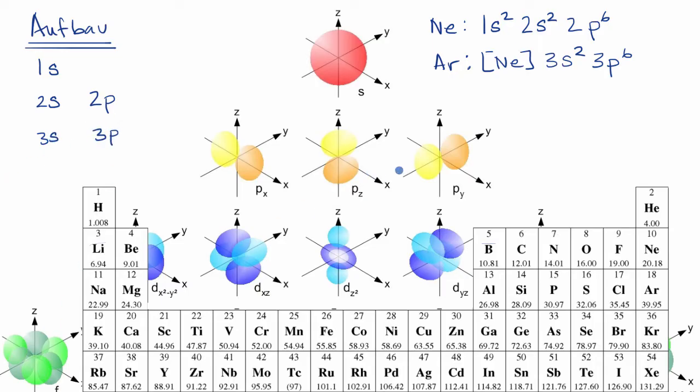Now, what would be the electron configuration of calcium? Pause the video and think about it. Well, calcium has 20 protons, so a neutral calcium would have 20 electrons, so two more electrons than argon. So we can build off of argon. And where are those electrons going to go?